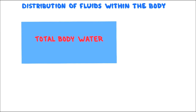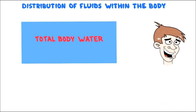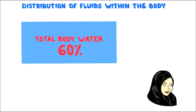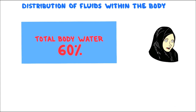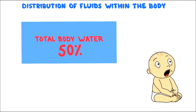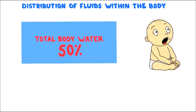In a young adult, total body water is approximately 60%. But importantly, the total body water for women is 50%, because the 10% of fluid which men have, women have adipose tissue instead — including mammary glands. Total body water in a rapidly growing infant is approximately 75% of body weight.